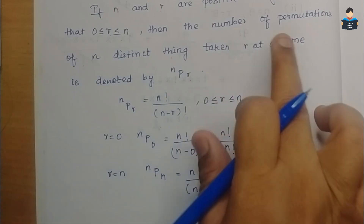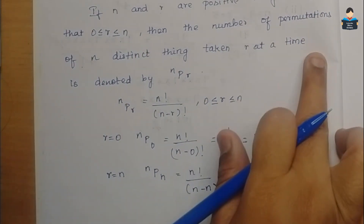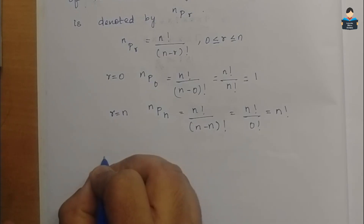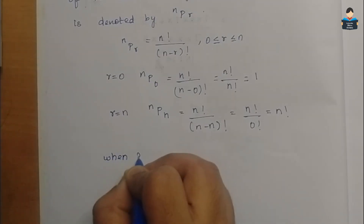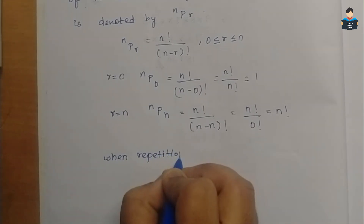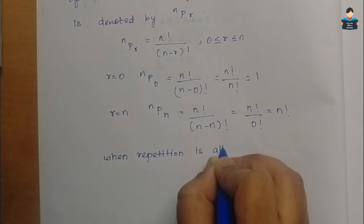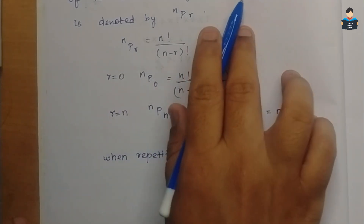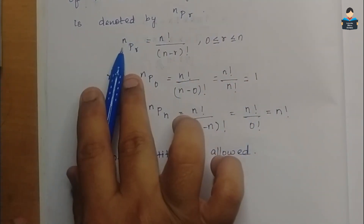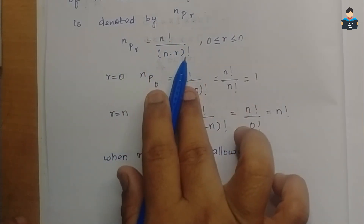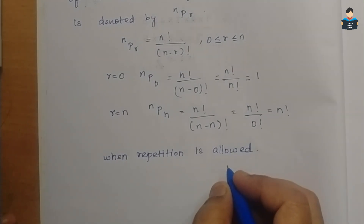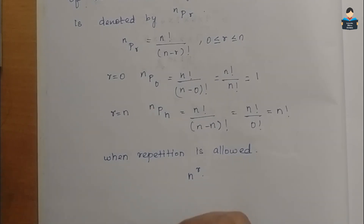When repetition is not allowed, we use nPr equals n factorial by (n minus r) factorial. When repetition is allowed, the number of arrangements is n to the power r.